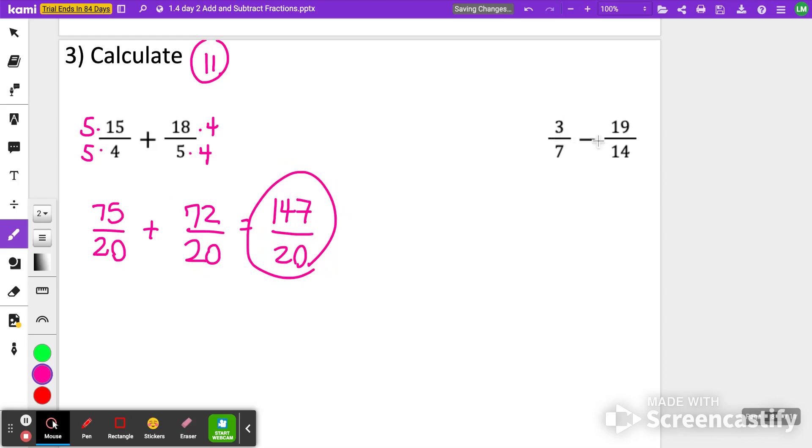Again, 3 sevenths minus 19 fourteenths. I can easily multiply 7 times 2 to make that a 14. So I'm going to get 6 fourteenths minus 19 fourteenths. Now here's where we want to be careful, because if you notice, I'm doing a 6 minus 19. That's a smaller number minus larger number. So I'm going to end up with a negative 13 over 14. How'd you do?